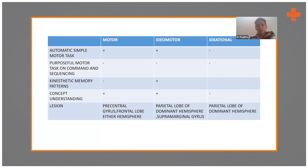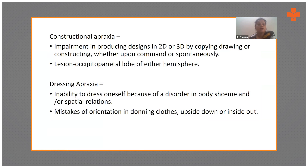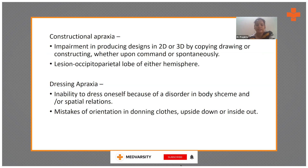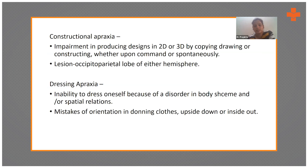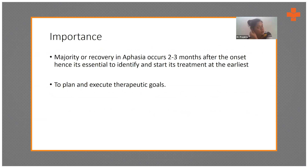Constructional apraxia is an impairment in producing 2D or 3D designs by copying, drawing, or constructing, whether on command or spontaneously. The lesion is usually in the occipitoparietal lobe of either hemisphere. Dressing apraxia is the inability to dress oneself due to a disorderly body scheme or spatial relations errors — donning clothes upside down or inside out. Constructional and dressing apraxia can often occur together.